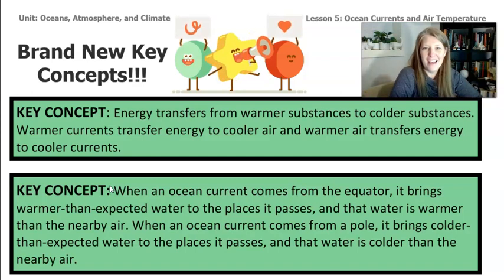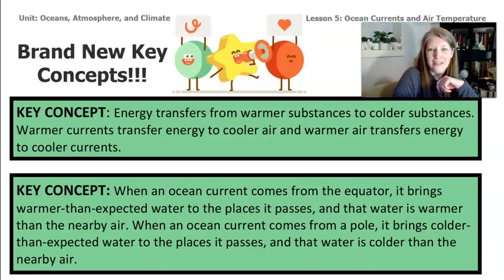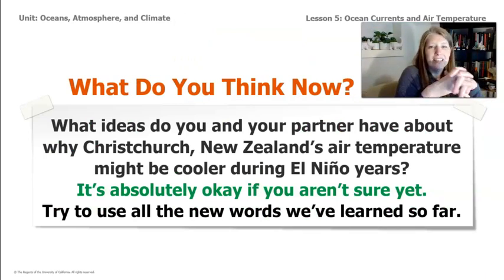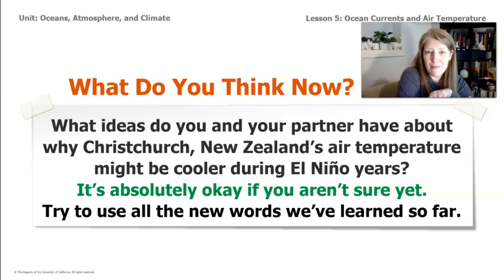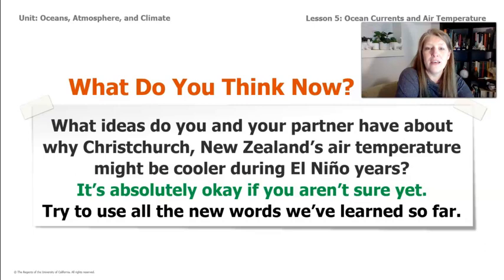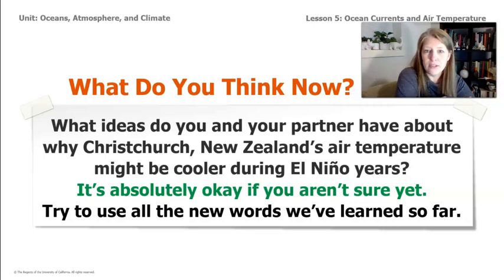Congratulations on these new key concepts. Here's a little challenge before we come back together for lesson six: think about why Christchurch, New Zealand's air temperature might be cooler during El Niño. You can discuss with a partner or write your thoughts down, but come with your ideas prepared before lesson six. We know what it's like during normal years — we saw the currents. What do you think might be happening during an El Niño year? Try to use all the new vocabulary we've learned.